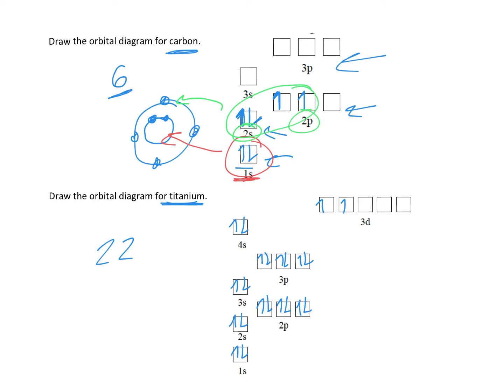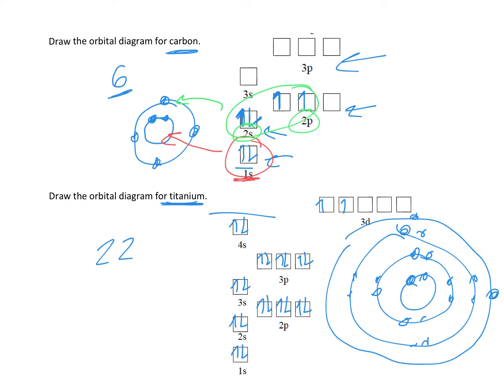For titanium, if we drew a Bohr model, it would be tougher. The first ring holds 2, the second ring holds 8, then we'd have 8 in the third at first. This is why we don't do Bohr models beyond calcium - after element 20,